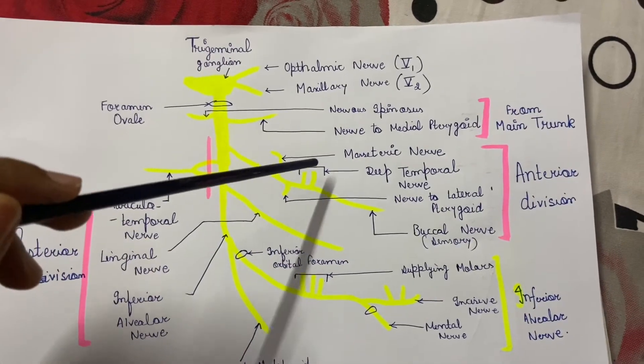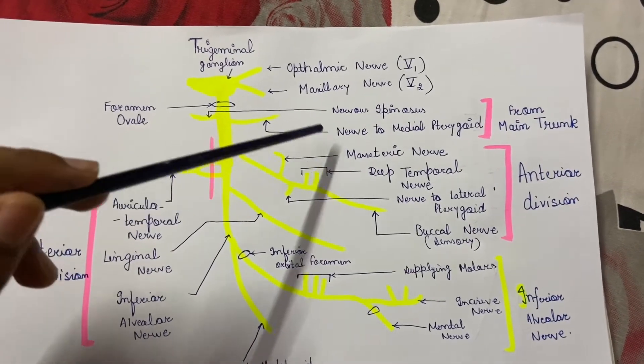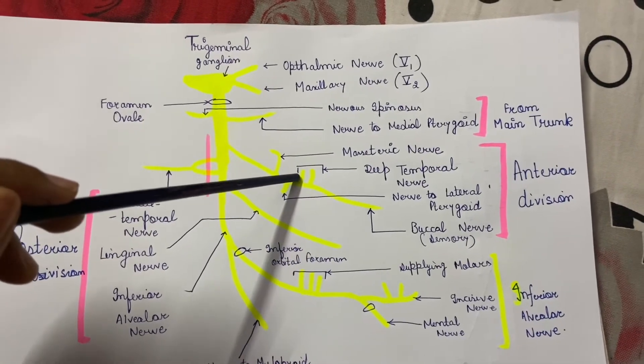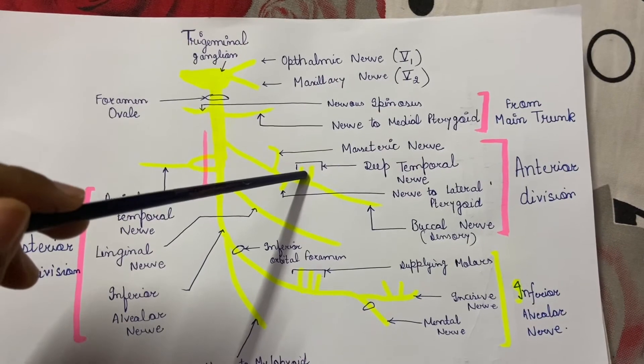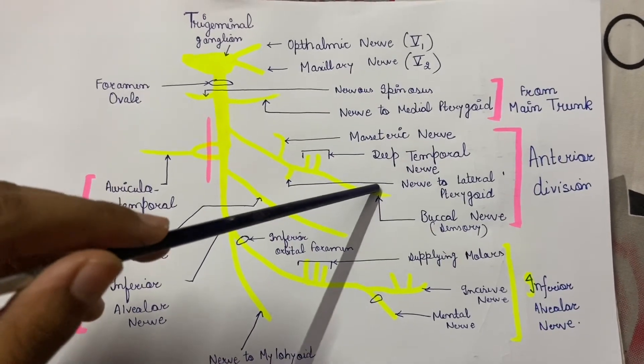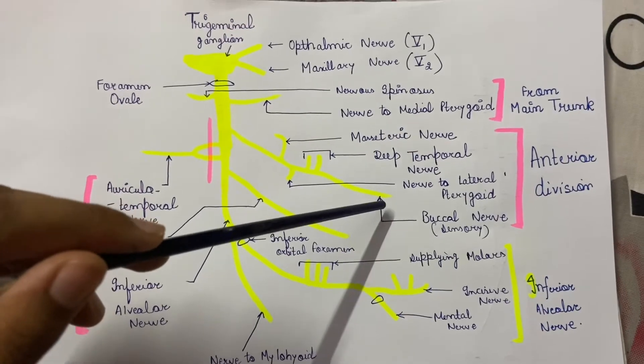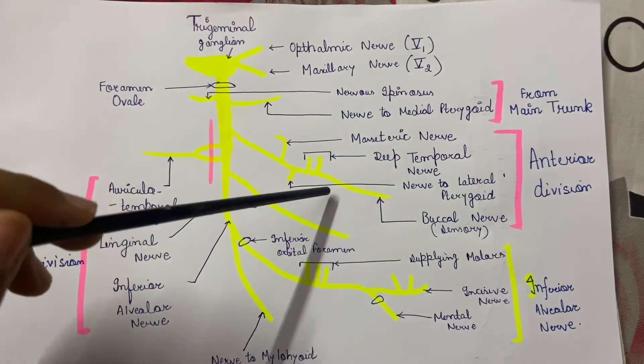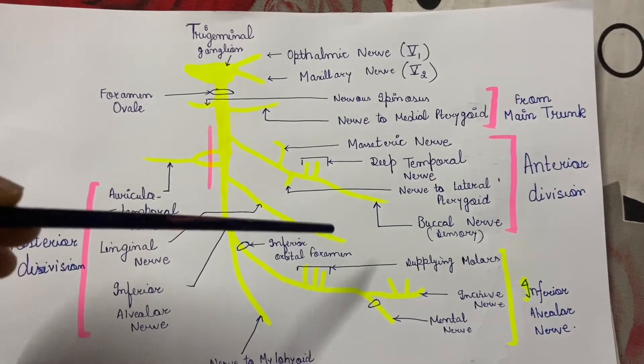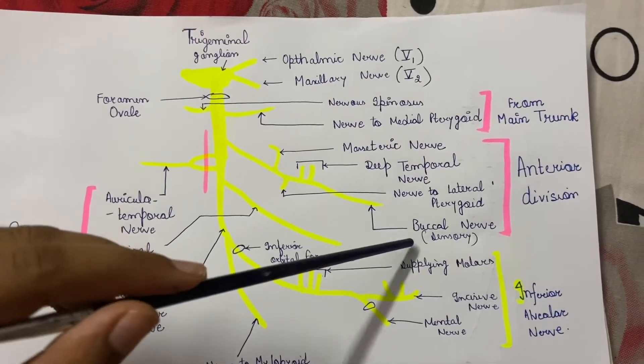It gives the masseteric nerve which supplies the masseter muscle, the deep temporal nerves, anterior and posterior, which supply the temporal muscle, and the nerve to the lateral pterygoid which supplies the lateral pterygoid muscle. There is a branch going down which is known as the buccal nerve, which is a sensory division.